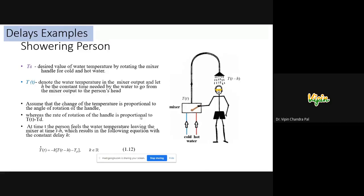Another example shown in the slide: a person is showering and wants to mix cold and hot water. After mixing, it reaches the shower. The time at which mixing starts is t, and the time at which the person receives the shower is delayed by h units. This modeling is represented by equation 1.12.